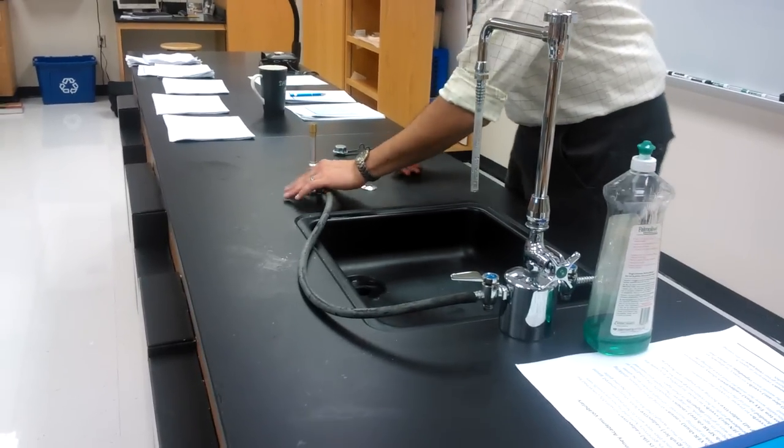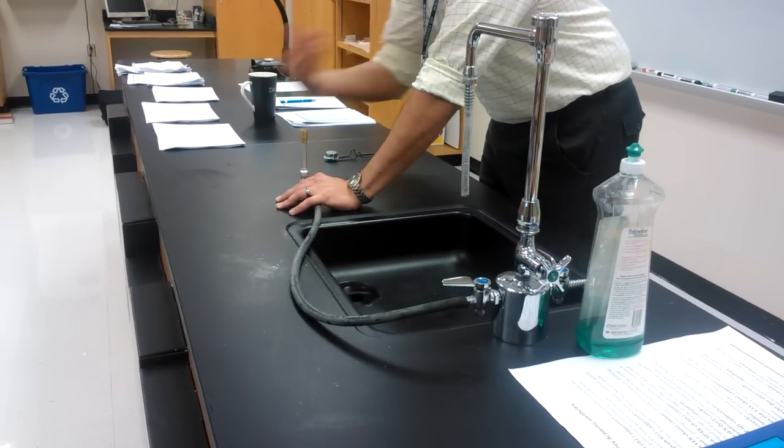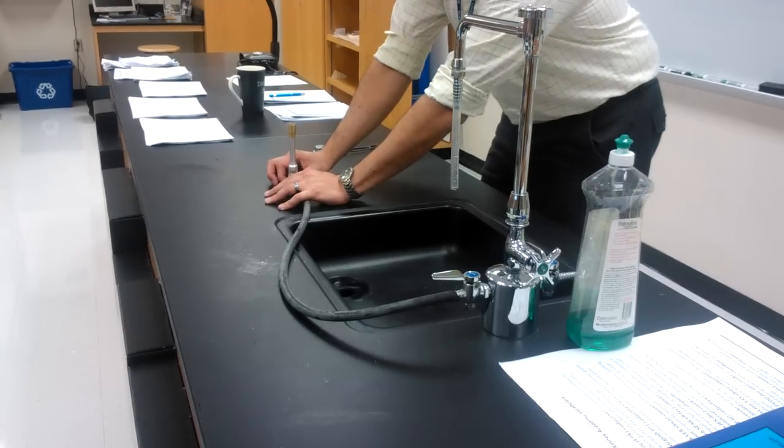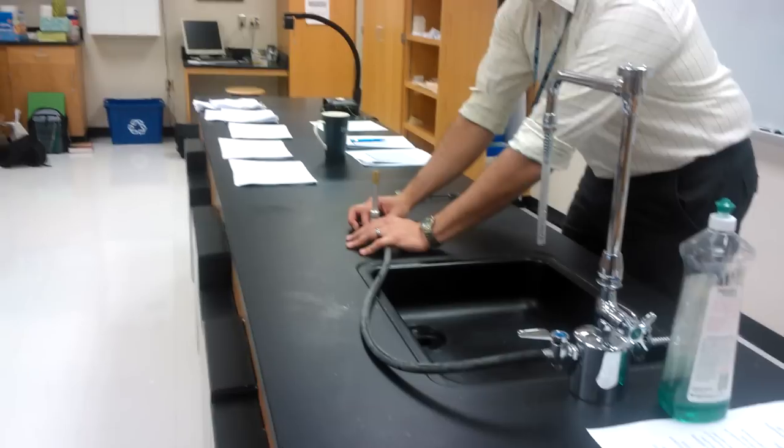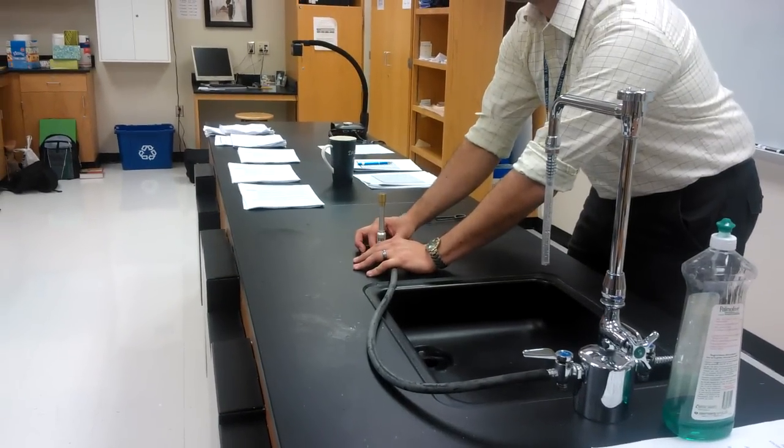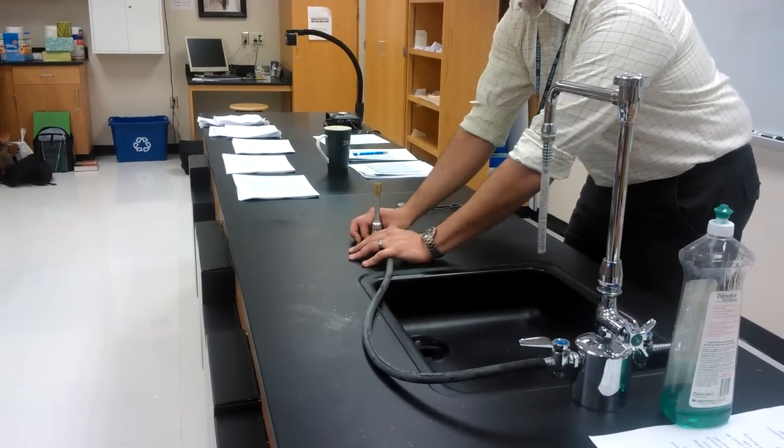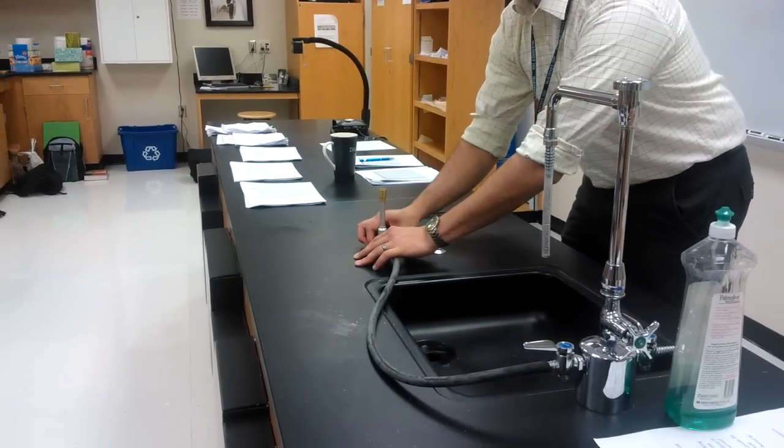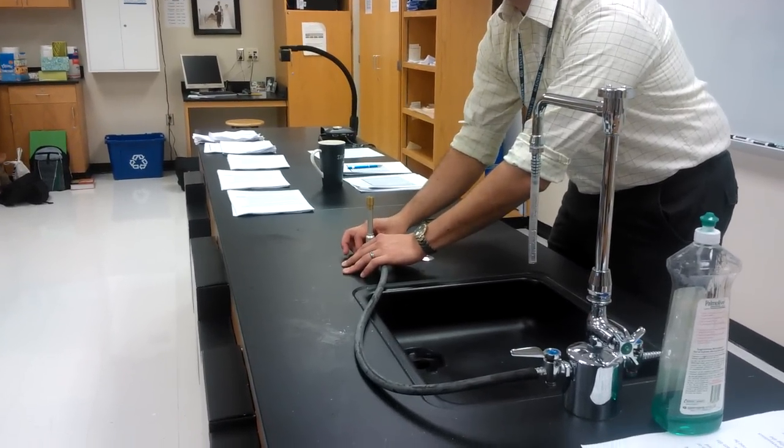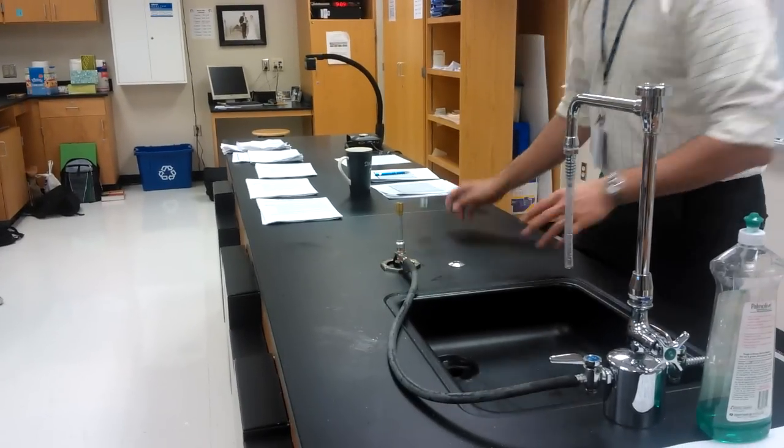So now with our hand on the base to make sure it doesn't tip over, I'm going to turn the knob to open it until I can hear some gas coming out. I can hear the gas. Now I'm going to close it again real quick because I want to show you how to properly use the striker that we're going to use to light our Bunsen burner.